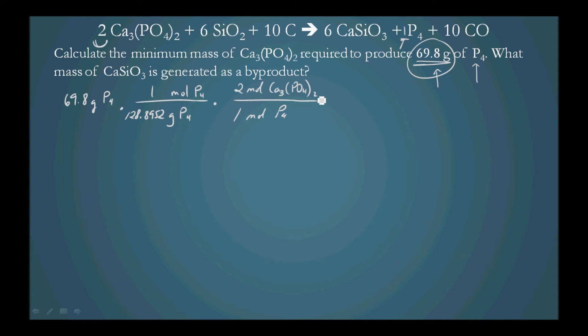So now we're into moles of this. However, we need the minimum mass, and the unit for mass is grams. So then we must convert moles of Ca3(PO4)2 into grams. So 1 mole of Ca3(PO4)2 is 310.1782 grams.